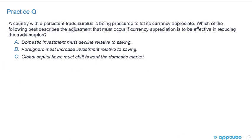One last practice question to finish this LOS: A country with a persistent trade surplus is being pressured to let its currency appreciate. Which of the following best describes the adjustment that must occur if currency appreciation is to be effective in reducing the trade surplus? A, domestic investment must decline relative to savings; B, foreigners must increase investment relative to savings; or C, global capital flows must shift towards the domestic market.